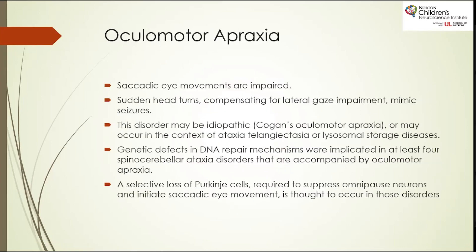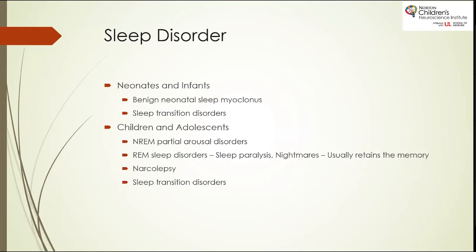Oculomotor apraxia, which involves saccadic eye movement impairment, is another similar non-epileptic event. The fourth category of non-epileptic events includes sleep disorders: benign neonatal sleep myoclonus, sleep transition disorders, some partial arousal disorders, and other random sleep disorders like sleep paralysis and nightmares. These can all be very confusing with real epileptic sleep frontal lobe seizures.